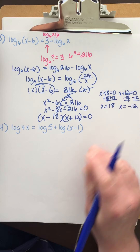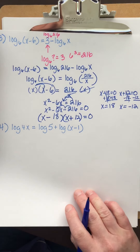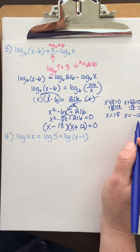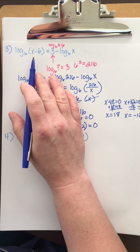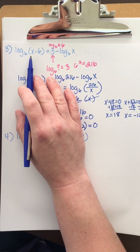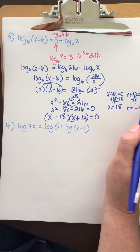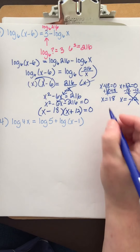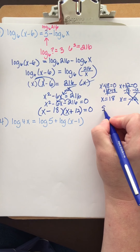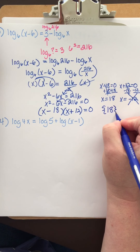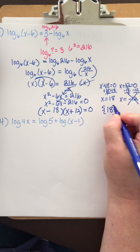Remember, I can't take the log of zero or a negative. If I plug negative 12 in, I would be taking the log of negative 18 — and that's a no-no. So that answer is not part of the solution. The solution is just x equals 18.